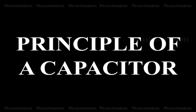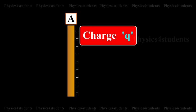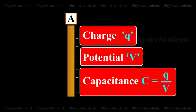Principle of a Capacitor. Consider an insulated conductor, plate A, with a positive charge Q, having potential V. The capacitance of A is C equals Q by V.